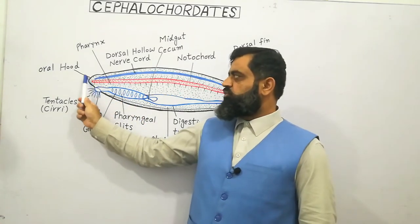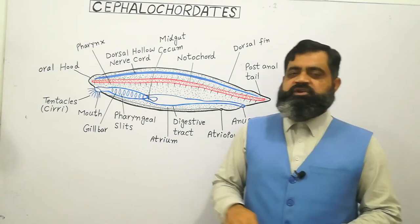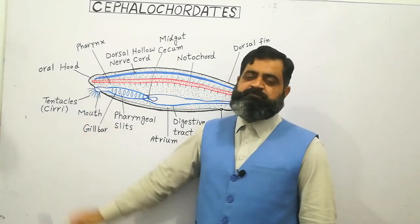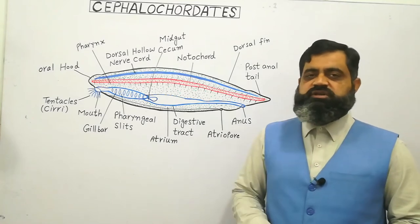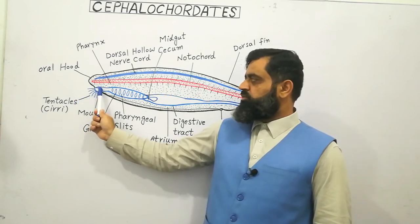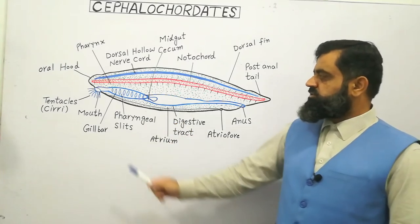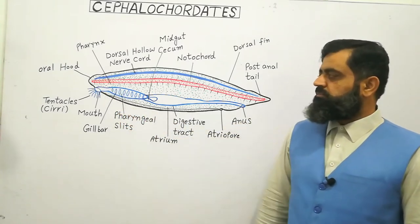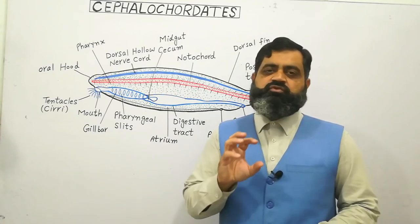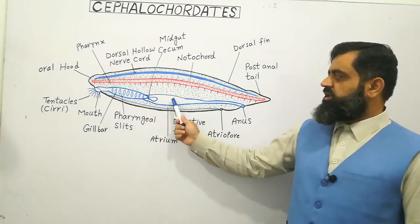If we look at the digestive system, on the front side there is a projection of the body known as the oral hood, which is projected outside from the sand. Food present in the sediments is trapped by small tentacles present on the ventral surface of the oral hood, known as tentacles or cirri. Larger food particles are trapped on the surface of the cirri and then transported into the opening known as the mouth. The mouth leads into a tube-like gut, and during this movement, the endostyle — also known as the thyroid gland — produces a string of mucus which traps the food particles.